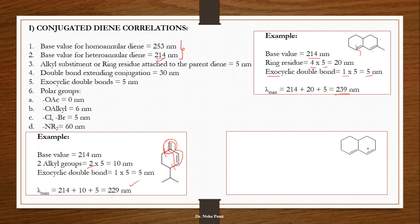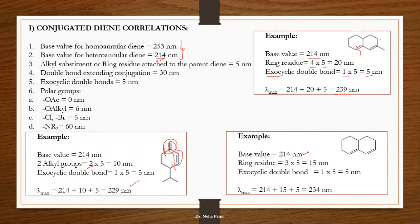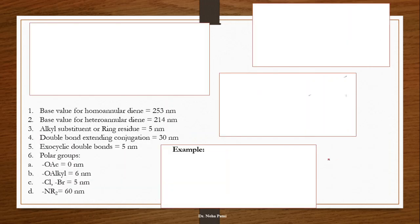For the next compound, the base value remains the same because it is still a heteroannular diene. Focusing on ring residues: there are three substituents on the diene carbon chain — first, second, and third — so ring residue is three. There is one exocyclic double bond here as well, and adding these contributions gives the calculated lambda max.